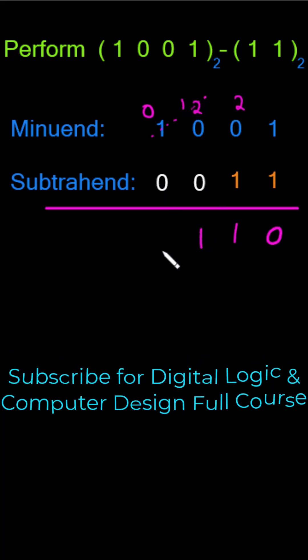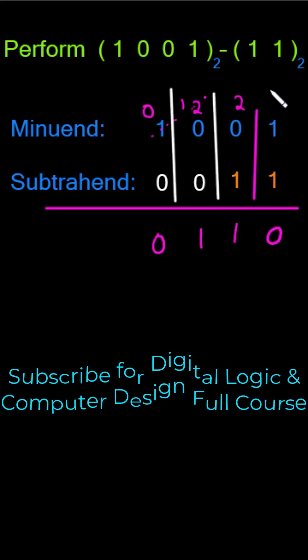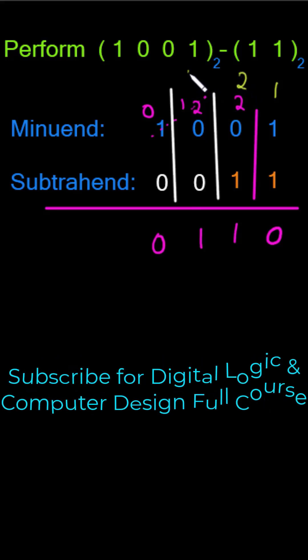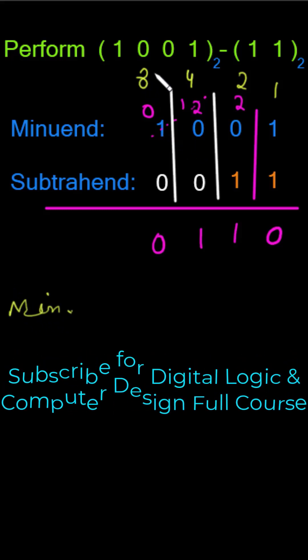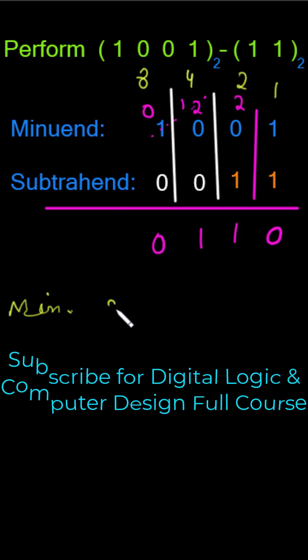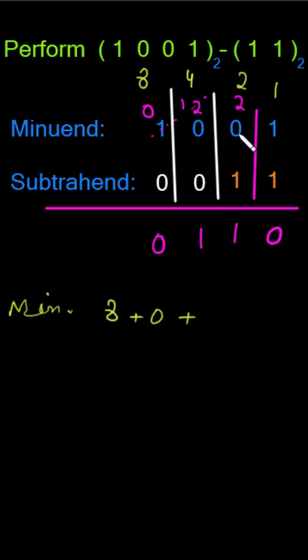Let's convert into decimal and verify our results. We know this column has a weight of 1, this column has a weight of 2, this column has a weight of 4, and this one has a weight of 8. The minuend will be: 1 times 8 equals 8, plus 0 times 4 equals 0, plus 0 times 2 equals 0, plus 1 times 1 equals 1. That's equal to 9.